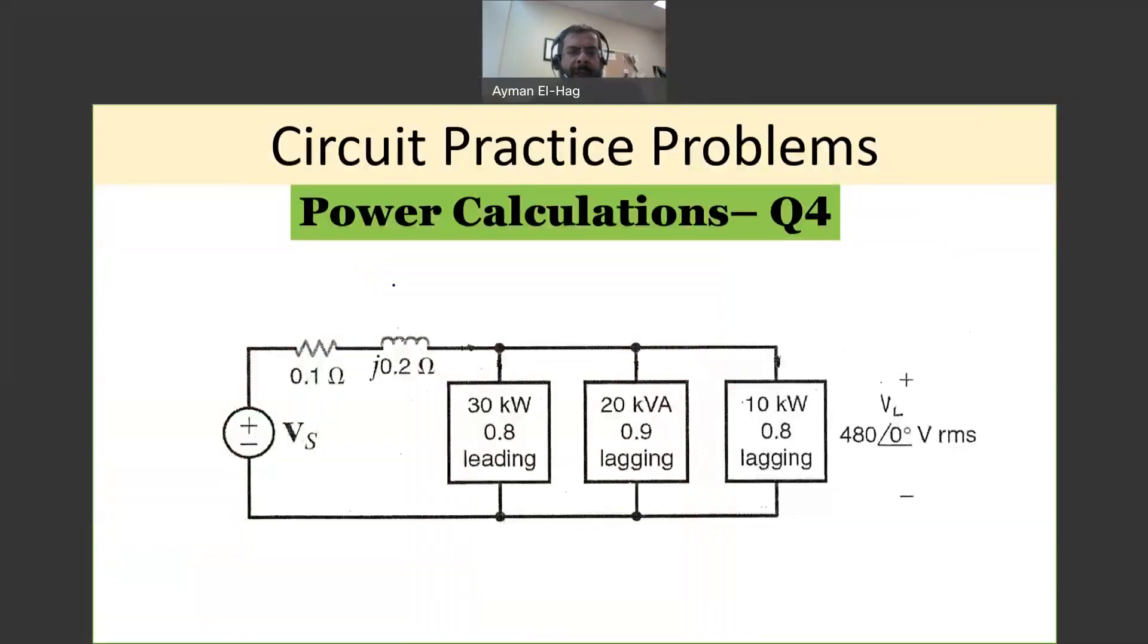Hi everyone, and welcome back to this series of questions related to circuits. More specifically, we are interested in solving problems that deal with power calculations. In this question, we have three loads connected in parallel. Unlike previous examples, we have the power expressed in kVA, not just in kilowatts, and we want to know how to deal with the question when we have the power given as kVA or as the apparent power.